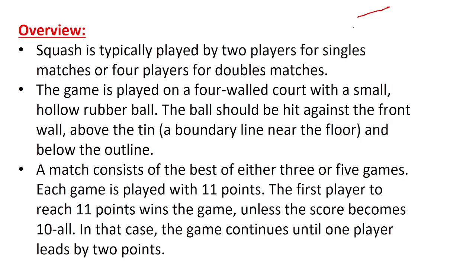The ball must be hit against the front wall. In this game you have a 4-wall court, a small rubber ball, and a racket. You hit the ball against the front wall and a boundary line is created near the floor. This match consists of the best of either 3 or 5 games. Every game is played to 11 points — the first player to reach 11 points wins.